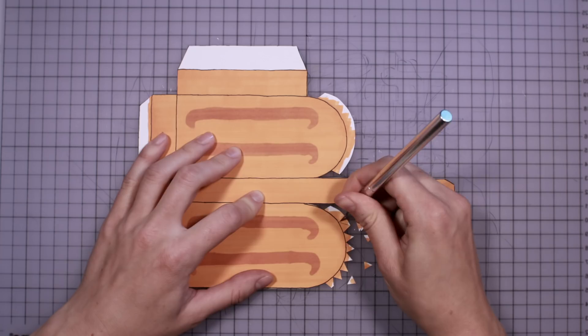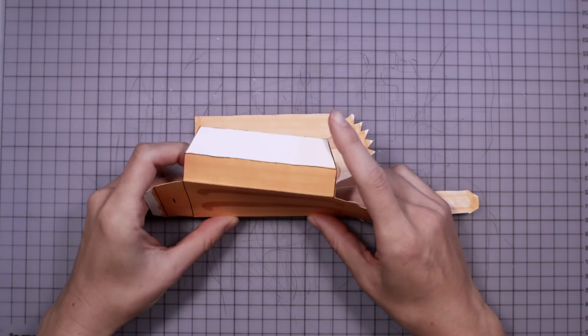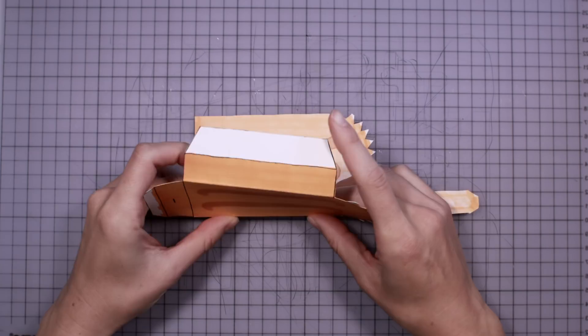Delighted by his invention, Frank begins making the frozen treat for friends, and as he grows older, begins selling them as epsicles, a contraction of his last name and the word icicle.